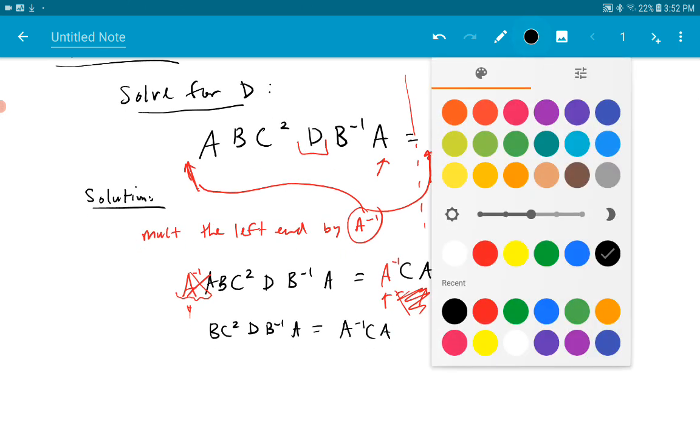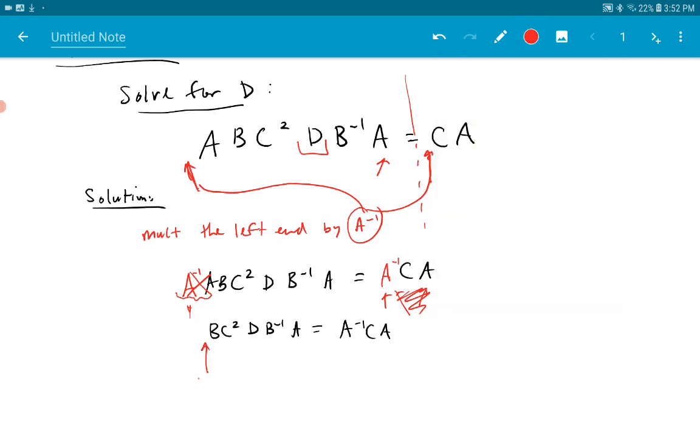Same thing. Let's put a B inverse here and a B inverse here. They'll cancel. We'll get C²DB⁻¹A equals B⁻¹A⁻¹CA.